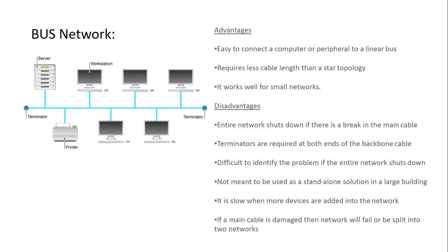The bus network is good for small networks, not for large ones, because it uses coaxial cable which has a cable length limitation. If you exceed that limit, there will be data drop. The main disadvantage is if the main backbone cable breaks at any point, the whole network goes down. There are BNC terminators, also called end caps, at each end of the link to close the connection.